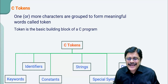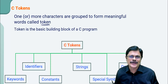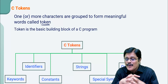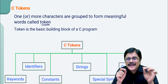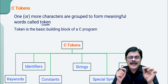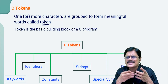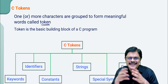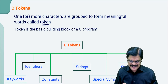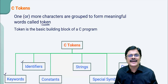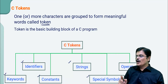Now, one or more characters are grouped to form meaningful words, which we call tokens. The token is the basic building block of a C program — it is the smallest basic unit in a C program. These tokens are used to build statements or instructions using syntax rules. The standard tokens in C language can be classified as keywords, identifiers, constants, strings, special symbols, and operators.